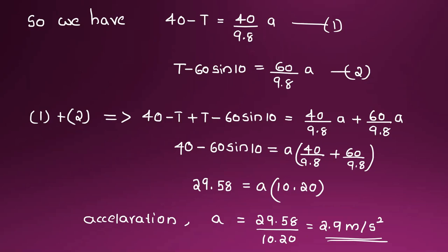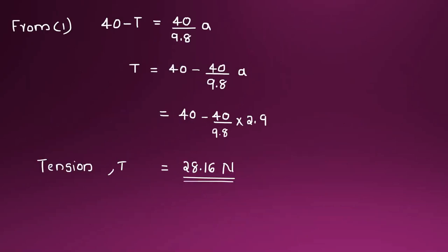The acceleration is 2.9 meters per second squared. Now substituting back into the first equation: 40 minus T equals 40 by 9.8 times A. So T equals 40 minus 40 divided by 9.8 times 2.9. Therefore the tension T equals 28.16 Newton.